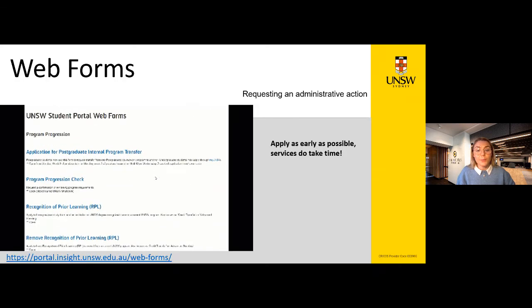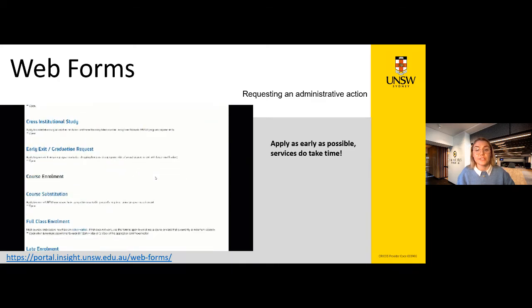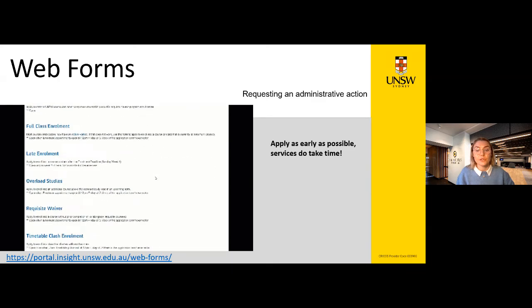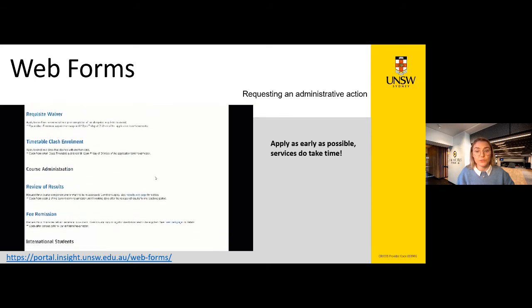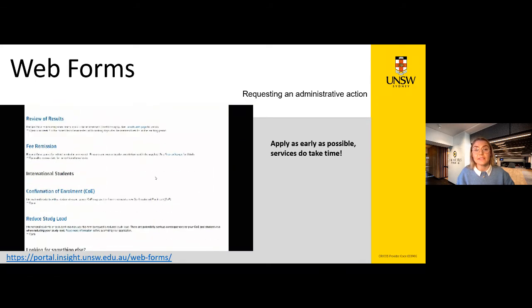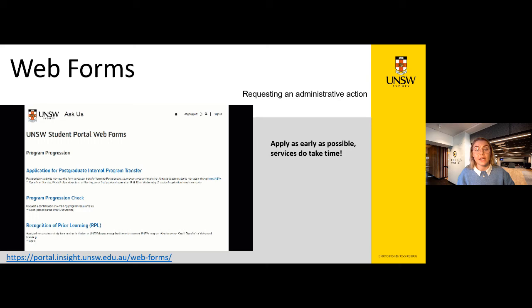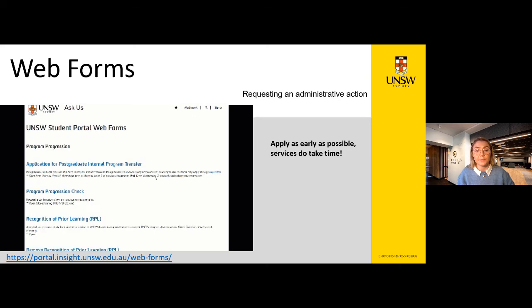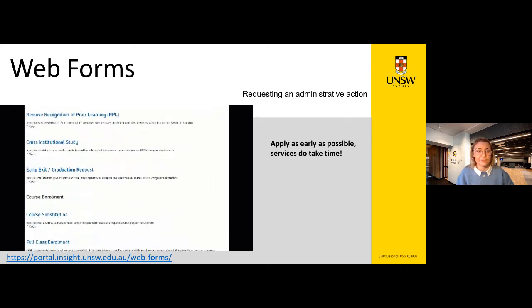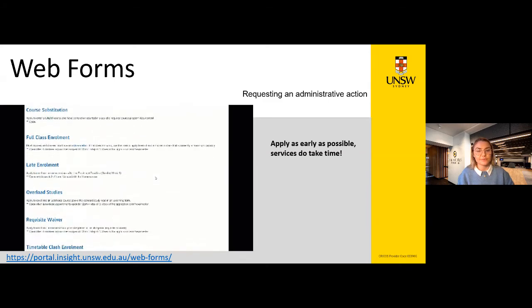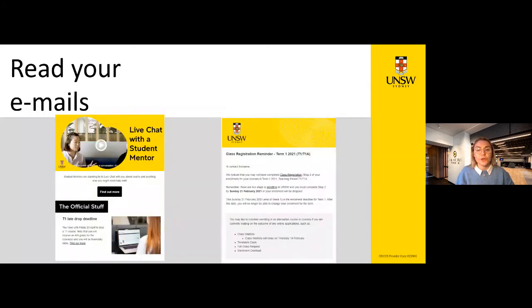The Student Hub is your first point of contact for most administrative or enrolment issues. You can make most requests via the web forms portal. It is important to make requests as early as possible as they can take some time to process. If your request type isn't listed, submit an 'Ask a Question' form at the bottom and direct it to the Student Hub. UNSW emails students on a regular basis — these emails are targeted and personal to you, so make sure you read every email.